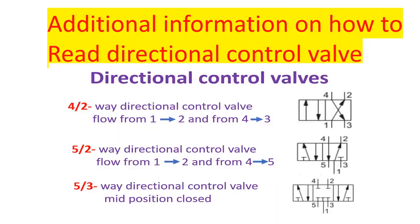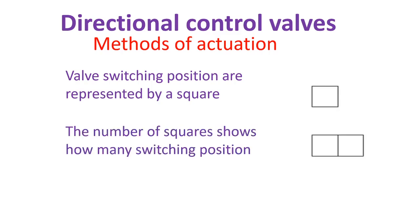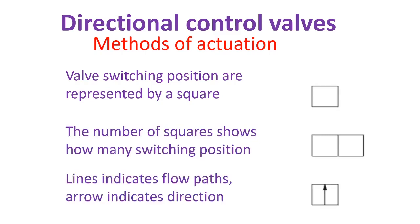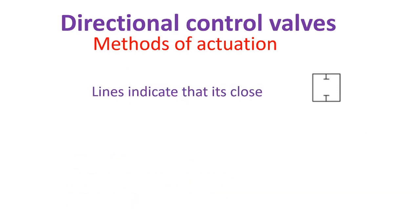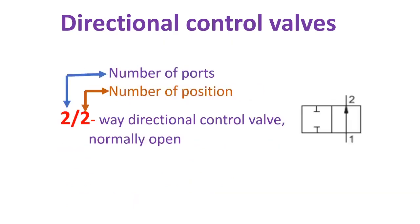Don't skip the video — we have additional information on how to read directional control valves. Valve switching positions are represented by a square; the number of squares shows how many switching positions there are. Lines indicate flow path, arrows indicate direction, and a line across indicates it is closed. Connections appear outside the box or valve. The first letter represents the number of ports, and the second letter represents the number of positions.